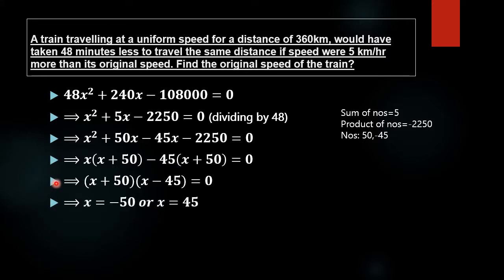Using the rule that if a times b equals 0 then either a equals 0 or b equals 0, we get either x plus 50 equals 0, that is x equals minus 50, or x minus 45 equals 0, that is x equals 45. Since speed cannot be negative, x equals minus 50 is rejected, and the original speed of the train is x equals 45 km per hour.